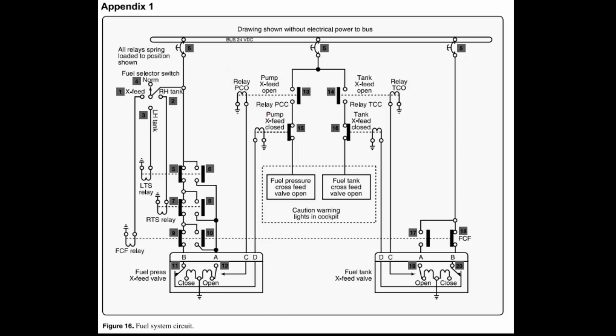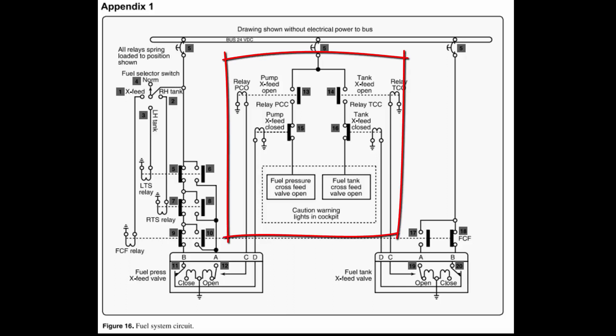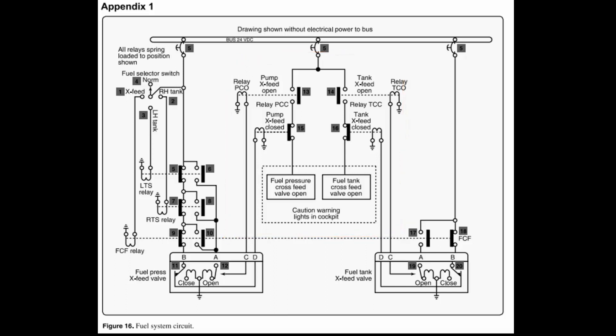Then I'm going to show you how it does flow on the schematic so you'll know both. This PCO relay is part of this indication system. What does it actually do? PCO means pump cross-feed open — that's the letter right next to it. So what this relay does is when it closes, it closes contact 13, and if contact 15 is also closed, it lights up the fuel pressure cross-feed valve open.